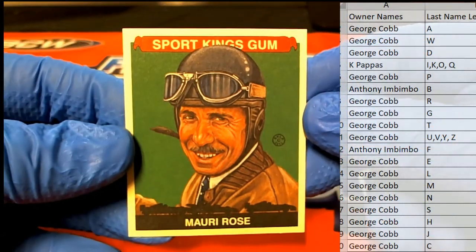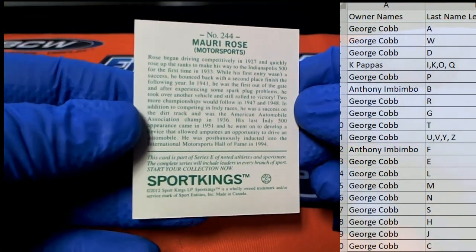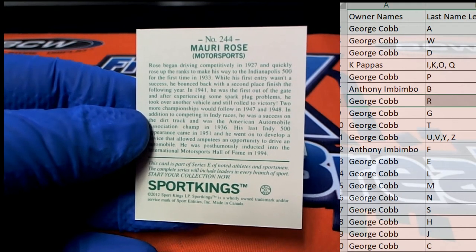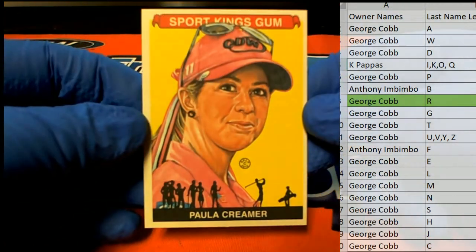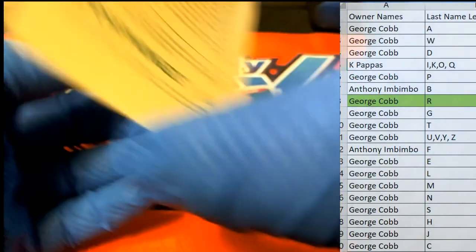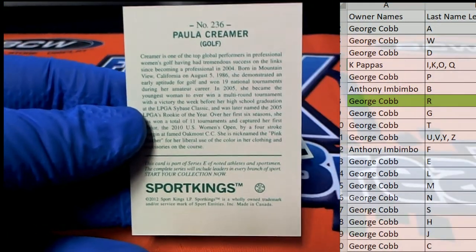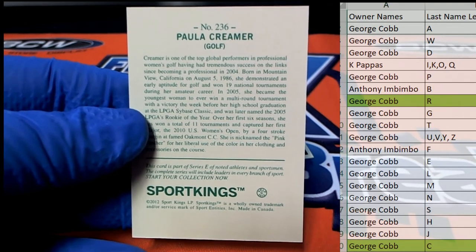All right, first up, Maury Rose. All right, old Motorsports. There we go, George. Very nice. Oh, Paula Kramer speaking of golf, here we go. Paula Kramer, very nice. Check that out, letters C. There you go George. Pretty beast golfer.